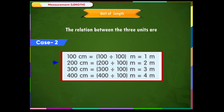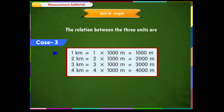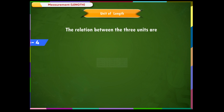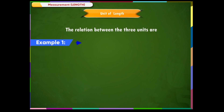Case 2: To convert centimeters to meters, we divide by 100. For example, 200 cm ÷ 100 = 2 m; 300 cm ÷ 100 = 3 m; 400 cm ÷ 100 = 4 m. Case 3: To convert kilometers to meters, multiply by 1,000. Case 4: To convert meters to kilometers, divide by 1,000.